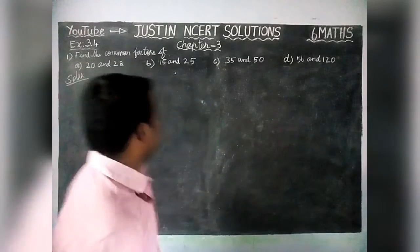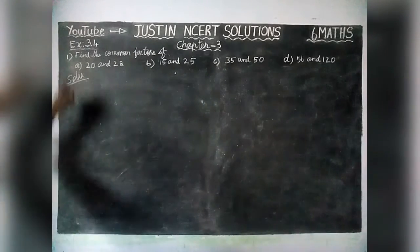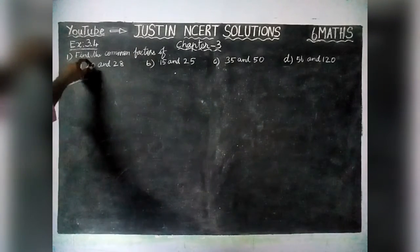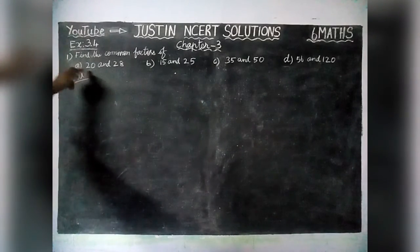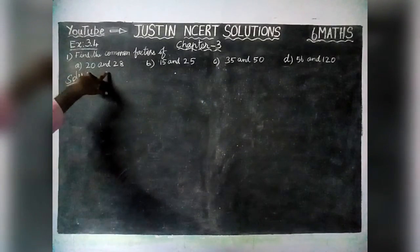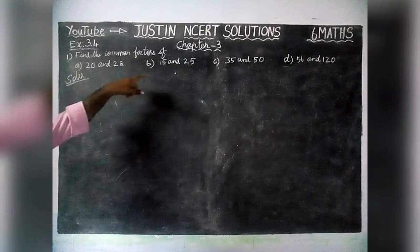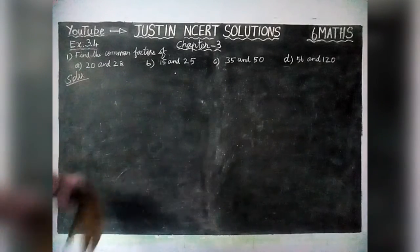First question: find the common factors of the given numbers — 20 and 28, 50 and 25, 35 and 50.